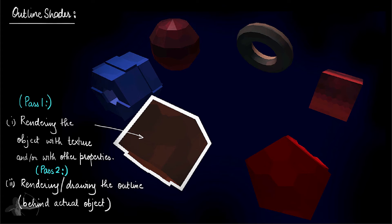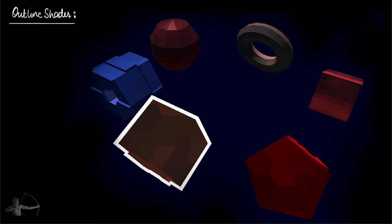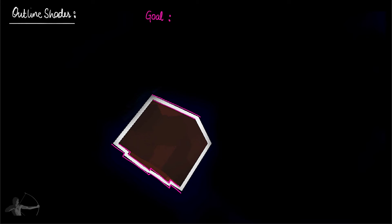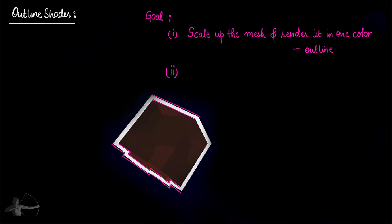The question for the second pass is how we are going to create the outline of the mesh. If you take a close look at the outline, you will see that the outline is just a scaled up version of the mesh, and it's rendered in a single color instead of the texture that is applied on the main object. So our goal in the shader will be to scale up the mesh and render it in one color to draw the outline, and once the outline is drawn, draw the original mesh with the texture.